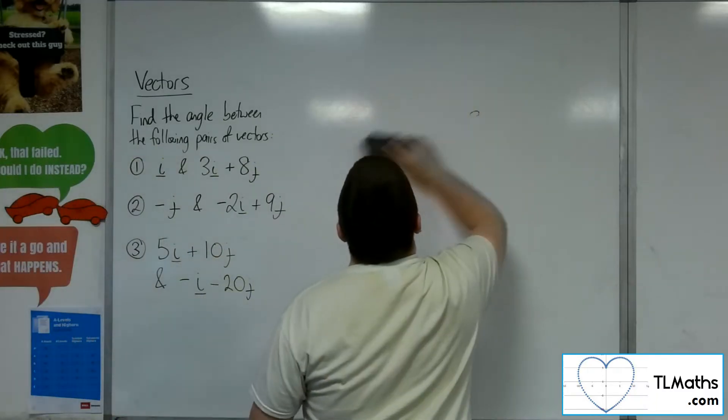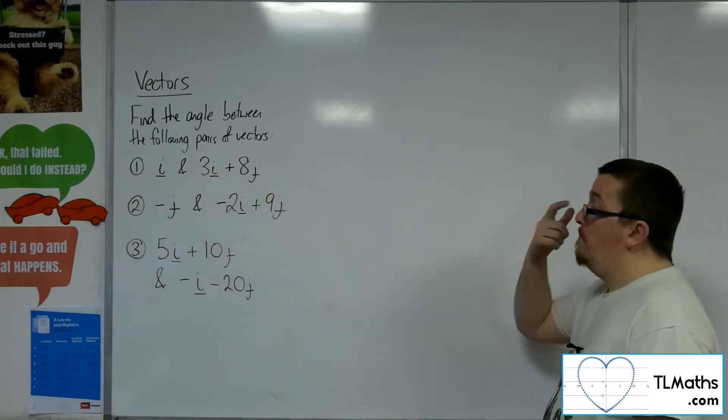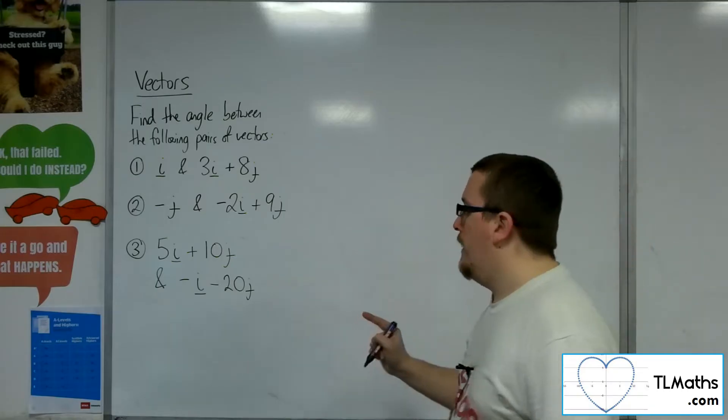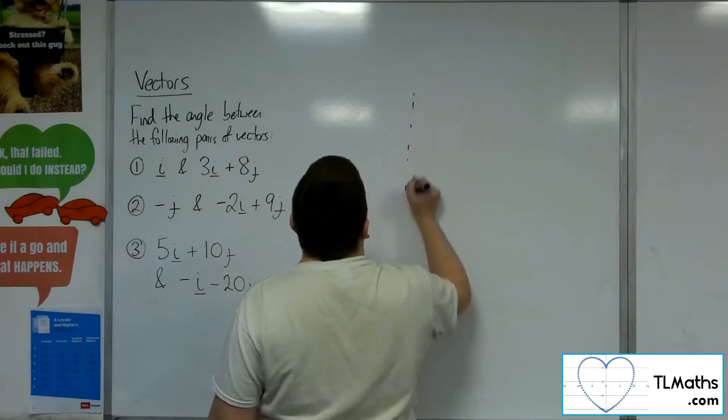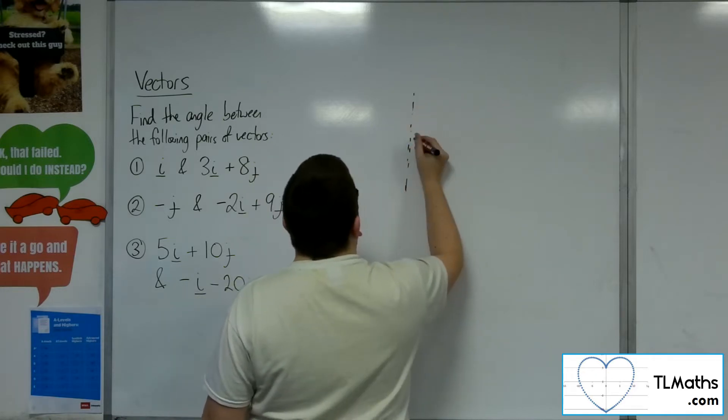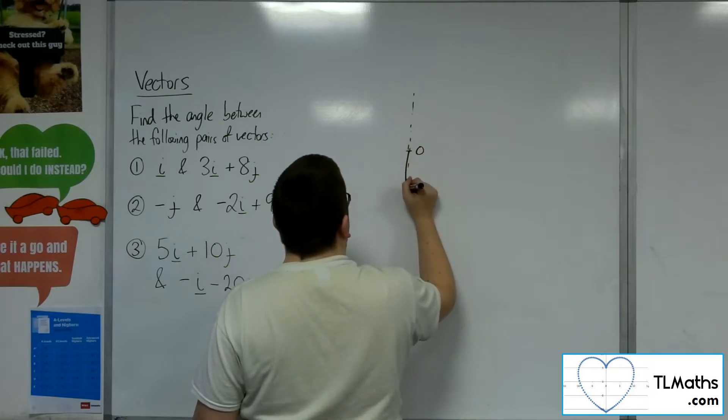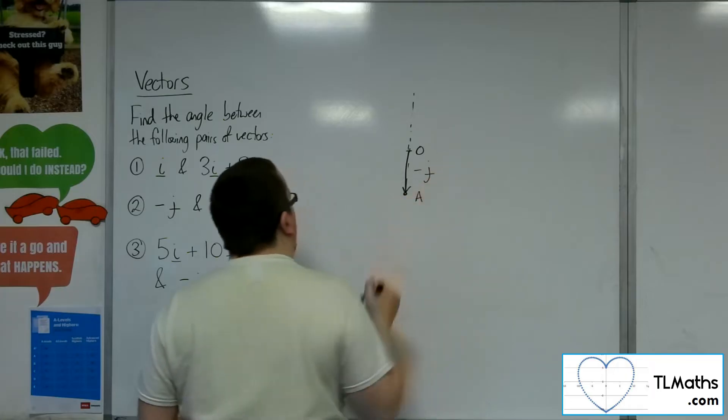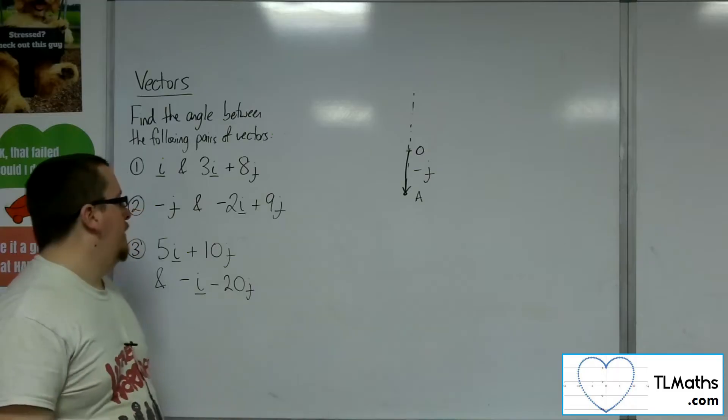Okay, so let's have a look at number 2. So now we've got minus j and minus 2i plus 9j. So minus j, so let's draw in a y-axis this time. So minus j, going from the origin here, and that will be point A, is just that vector there going directly down one unit.